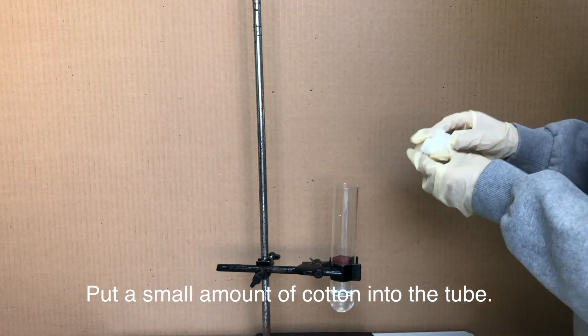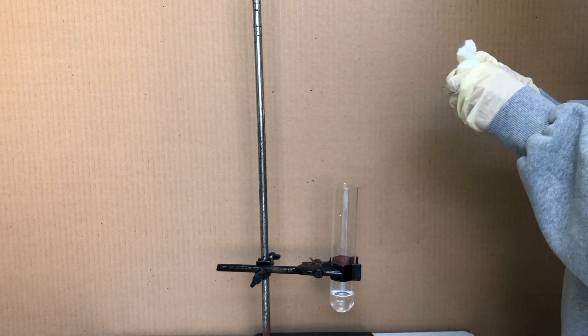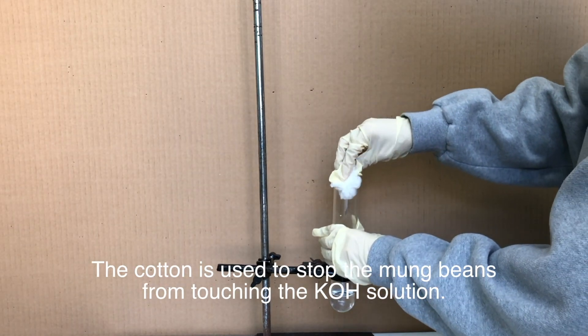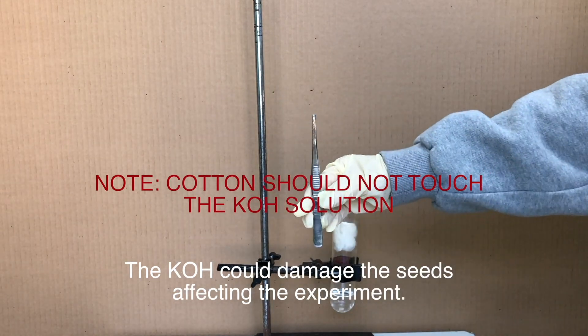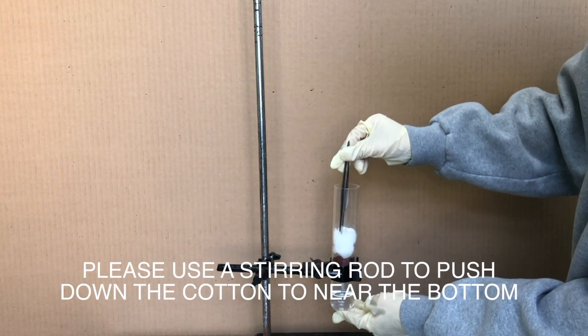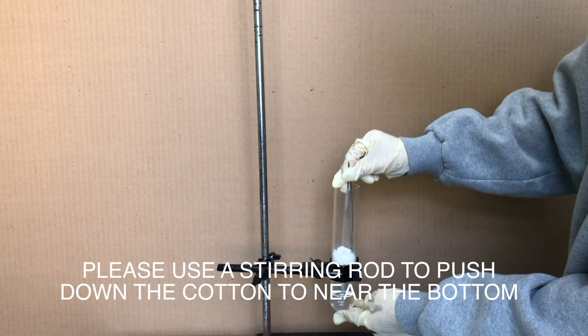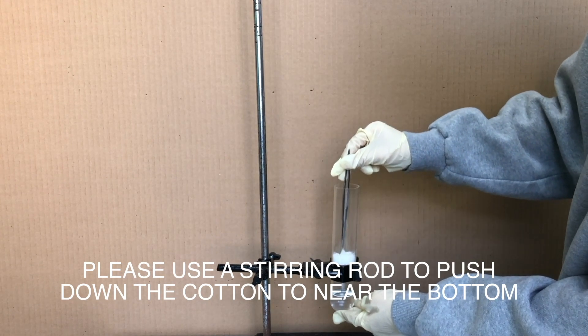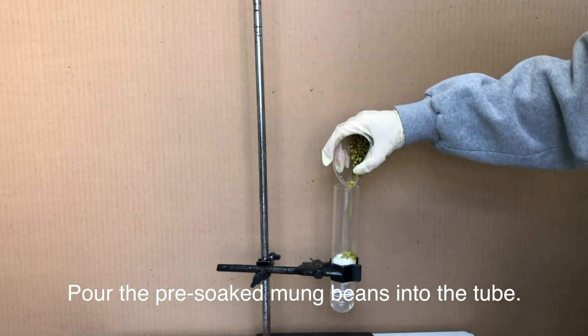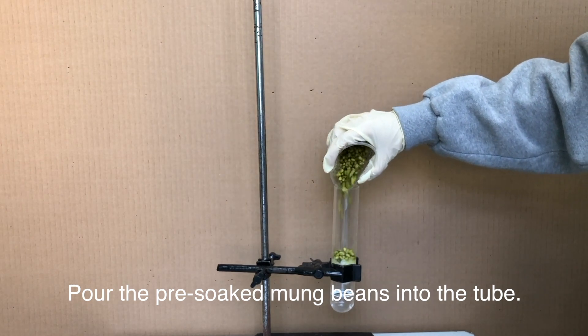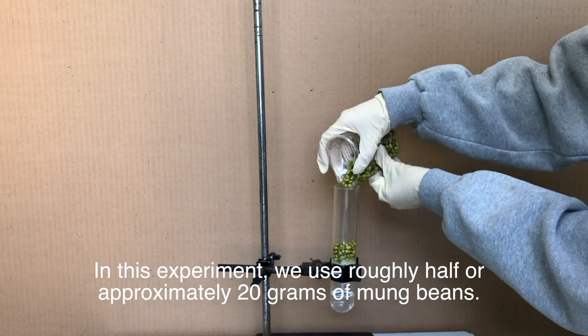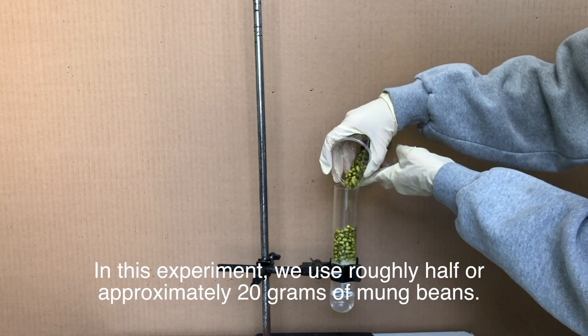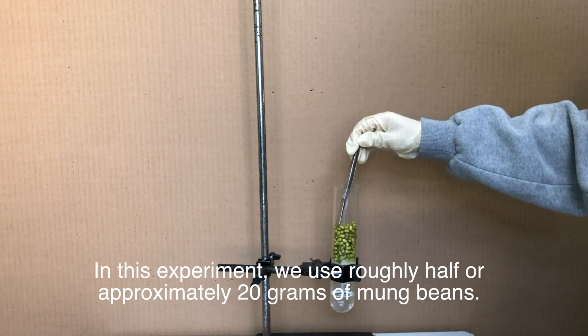Put a small amount of cotton into the tube. The cotton is used to stop the mung beans from touching the KOH solution. The KOH could damage the seeds affecting the experiment. Please use a stirring rod to push down the cotton to near the bottom. Pour the pre-soaked mung beans into the tube. The mass of the mung beans can be of your choosing. In this experiment, we used roughly half or approximately 20 grams of mung beans.